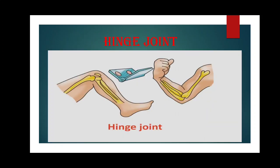The next type of joint is hinge joint. This type of joint allows back and forth movement, similar to the opening and closing of a door — and that's why it is called a hinge joint, like the hinge of a door, which allows back and forth movement. This type of joint is found in the elbow, knee, fingers and toes.